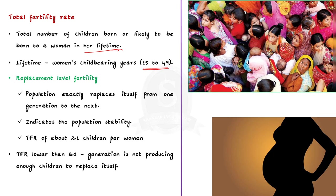Replacement level fertility is the level of fertility at which a population exactly replaces itself from one generation to the next. This replacement level fertility also indicates population stability. The total fertility rate of about 2.1 children per woman is called replacement level fertility — the rate at which population stability is achieved.